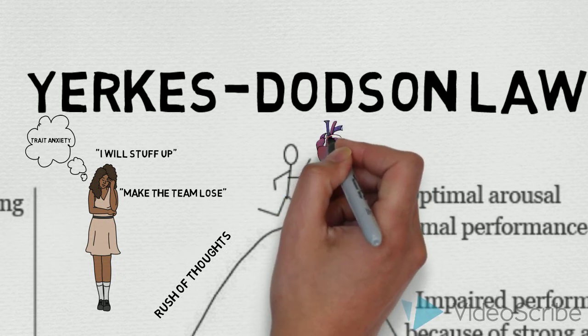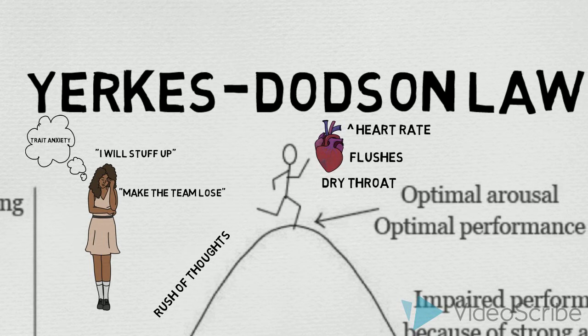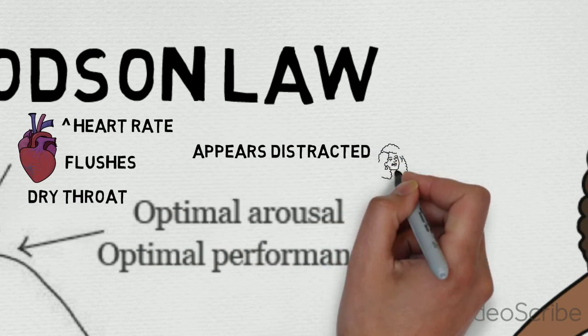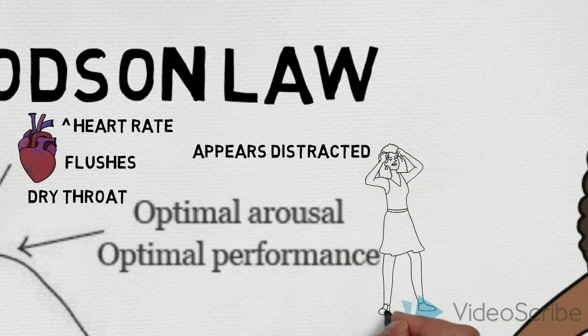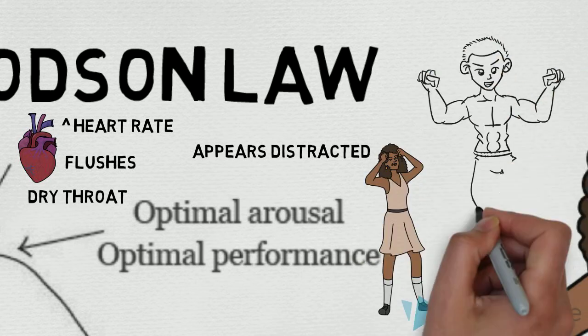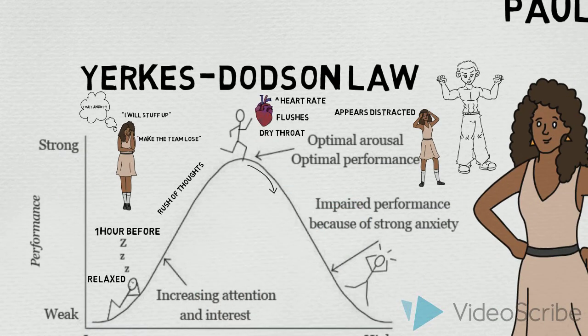Just before the race had started, Paula began to experience the physical symptoms of anxiety, such as increased heart rate, cold and hot flushes, and notably dry throat. She appeared distracted, focusing on the other team instead of what she was about to do. She is psyching herself out by noticing how the other team is much larger in weight than her team, arguably increasing her state anxiety and thus arousal.